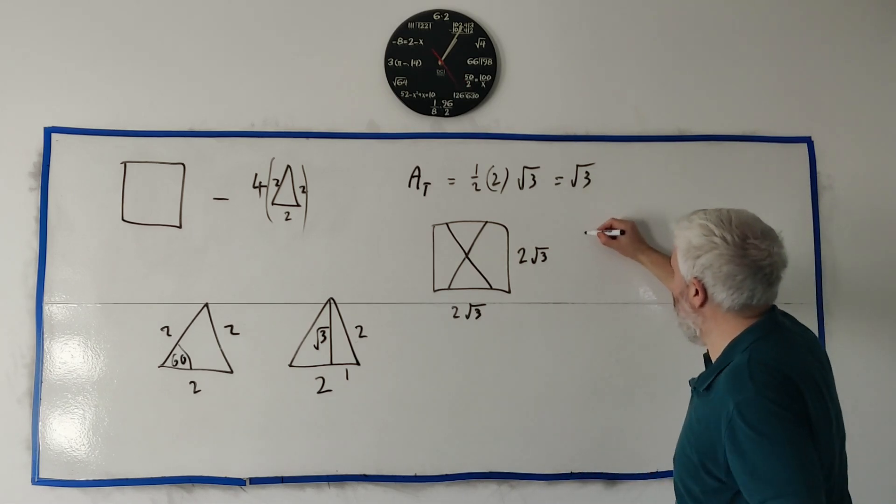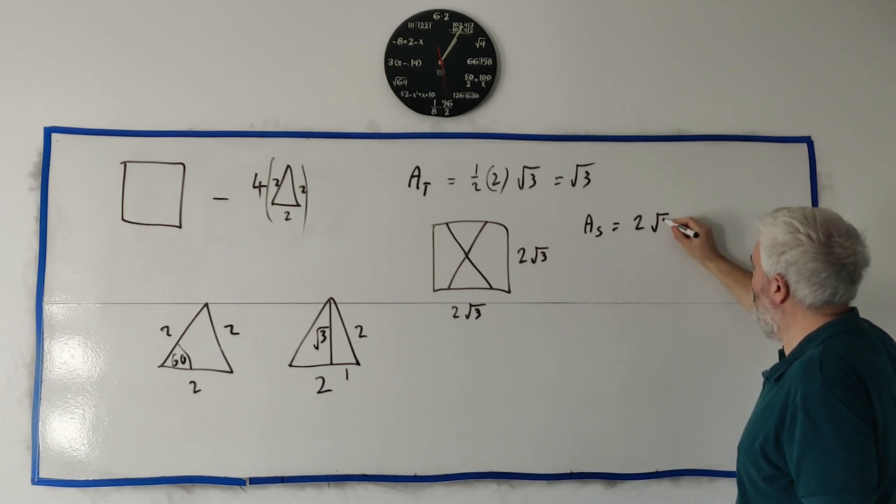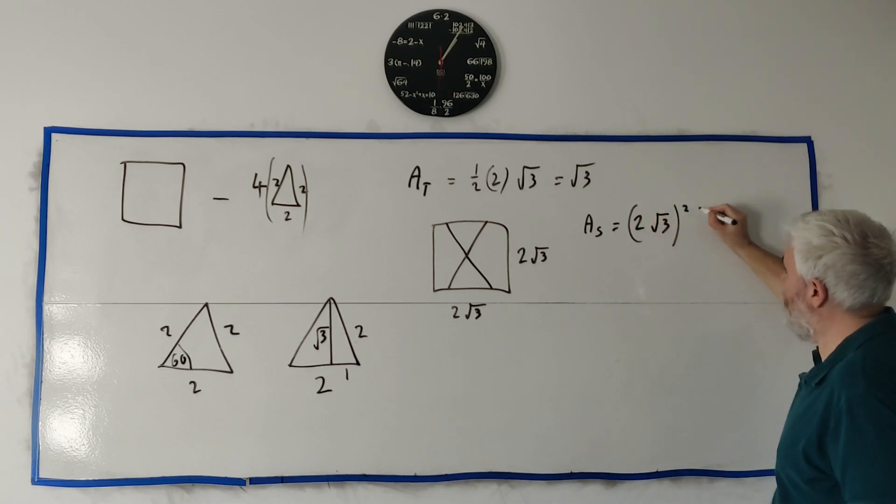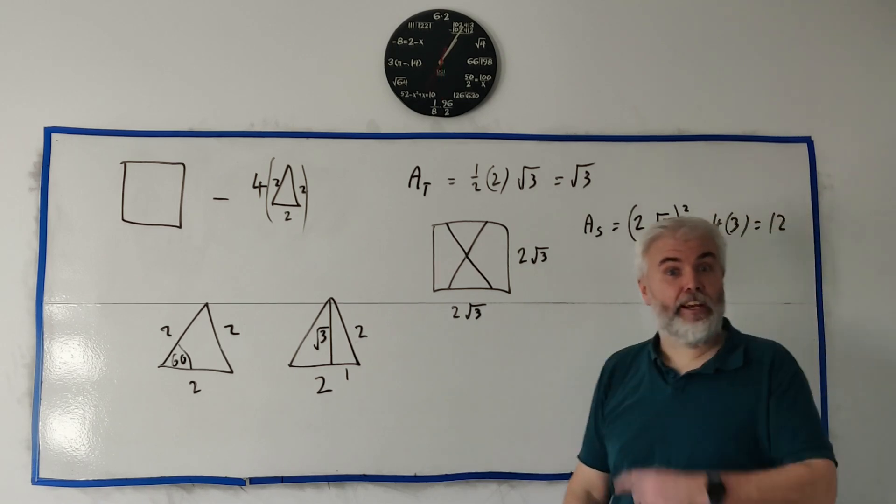So what's the area of this square? Area of the square is equal to two square root of three squared, which is four times three, which is twelve. That's the area of the square.